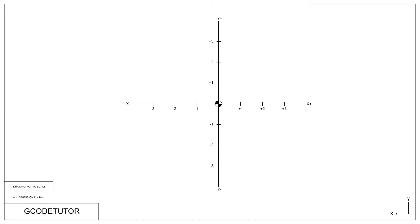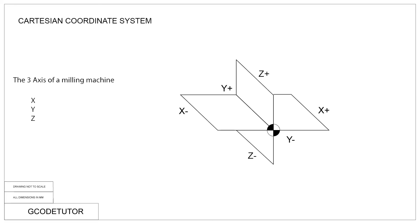As well as G-Codes and M-Codes, I also explain how different parts of CNC programming work. For example, here is the Cartesian coordinate system — I explain how it works in relationship to CNC programming.